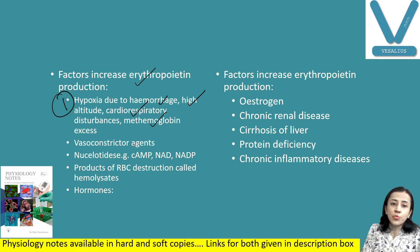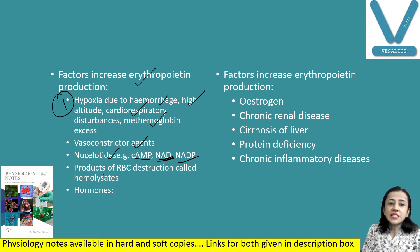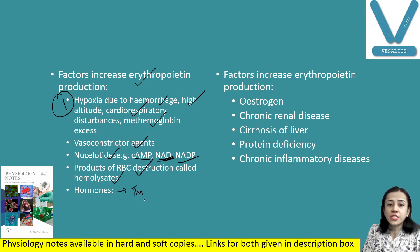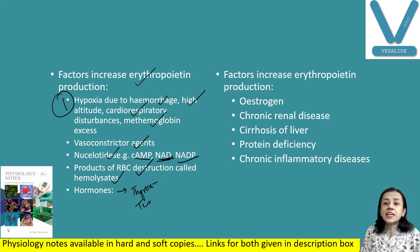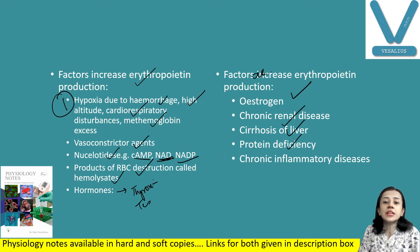Nucleotides like cyclic AMP, NAD, and NADP also increase erythropoietin secretion, as do products of RBC destruction like hemolysates. Certain hormones like thyroxine and testosterone increase erythropoietin secretion. Factors that decrease erythropoietin secretion include estrogen, chronic renal failure, cirrhosis of liver, protein deficiency, and chronic inflammatory diseases.